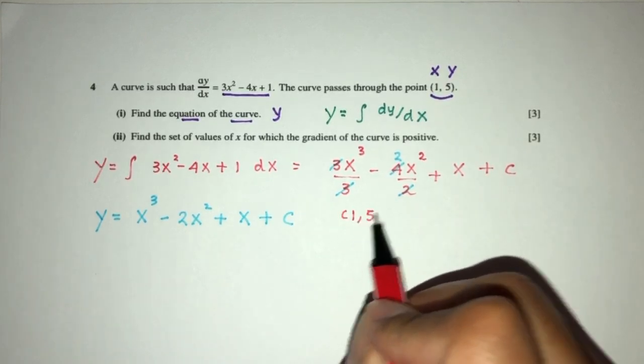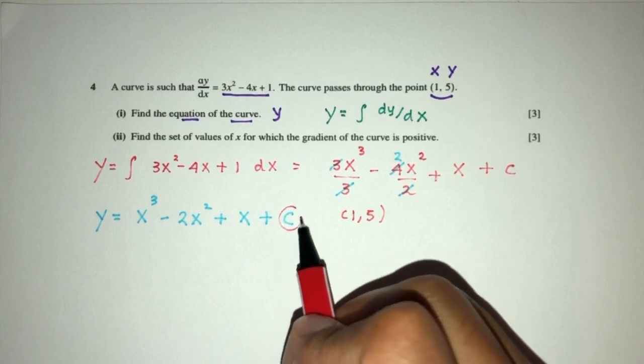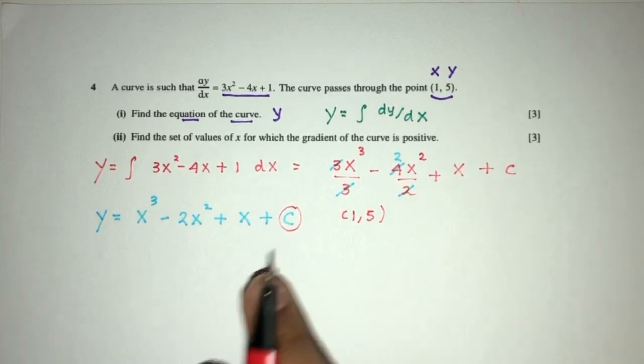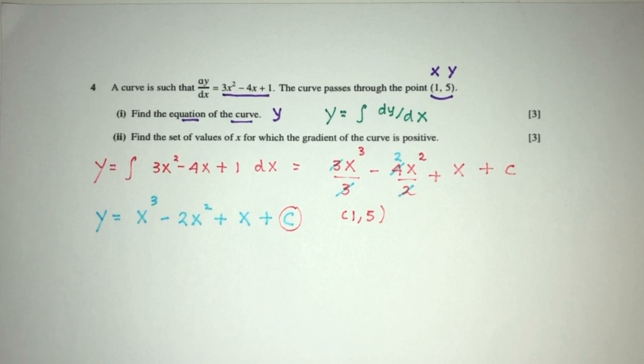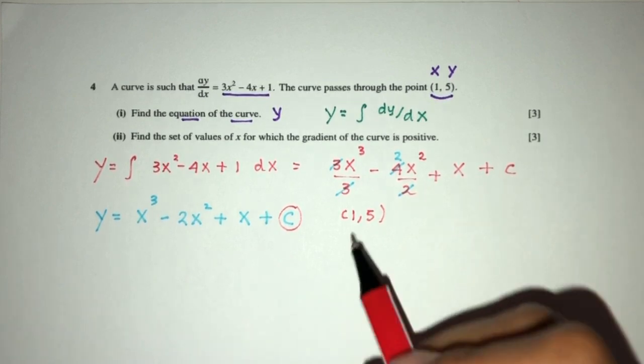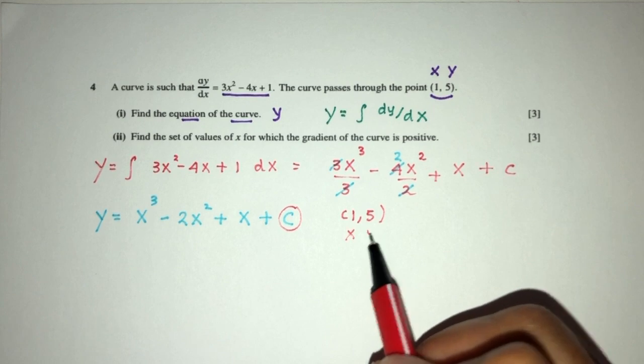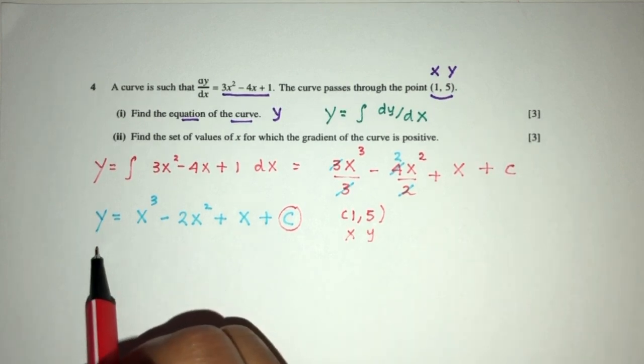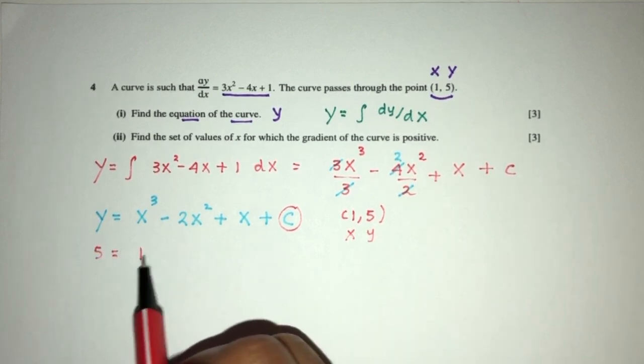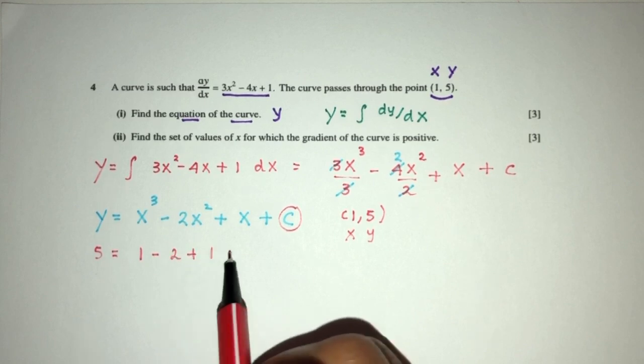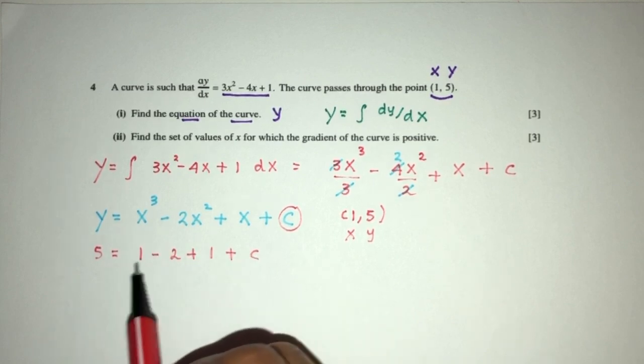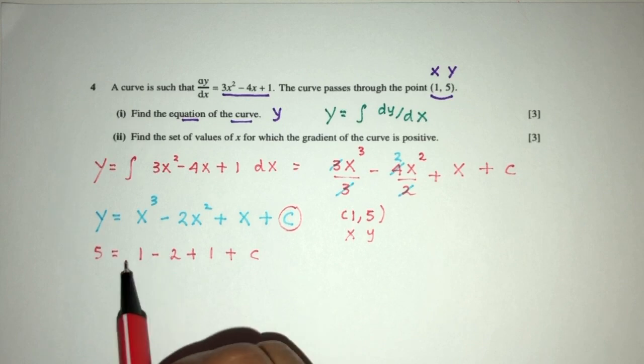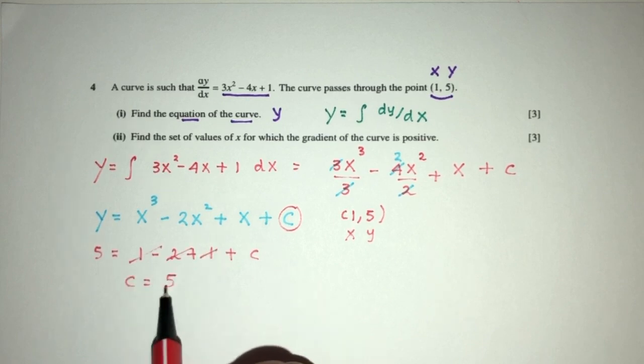Now, we have to use this point to find the value of c, because it is unknown in this equation, and we cannot leave our equation of curve with some unknown value. This is y, it's x, and y, replaced back in the equation. So 5 is equal to 1 minus 2 plus 1 plus c. This will cancel out. So 1 plus 1 is 2 minus 2 is 0. So c will be the value of 5.